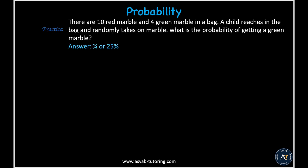Practice problem: there are 10 red marbles and 4 green marbles in a bag. A child randomly picks one marble. What is the probability of getting a green marble? The answer is 4 out of 14, which simplifies to 1/4 or 25%.